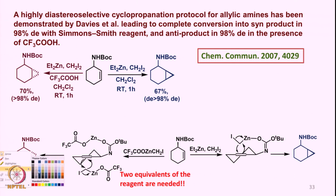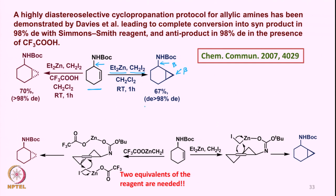Interestingly, even when nitrogen is present, cyclopropanation is directed in a very stereoselective fashion. Adding diethyl zinc and diiodomethane gives cyclopropanation from the same side as the nitrogen substituent — if this is beta, then the cyclopropane is also beta — with diastereoselectivity greater than 98%. However, when trifluoroacetic acid is added, the geometry of the cyclopropane is opposite to the orientation of the carbon-nitrogen bond: here beta becomes alpha, again with very high diastereoselectivity.